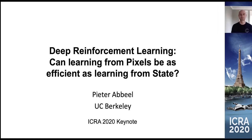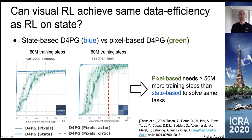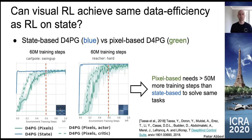The big question here is: can visual RL achieve the same data efficiency as RL that gets to operate on state? As roboticists, we know the benefit of access to state is that it summarizes everything you need to know about the environment into a small set of variables. You might expect that learning from state can be more efficient than learning from pixels.